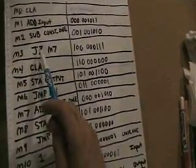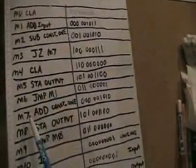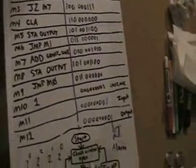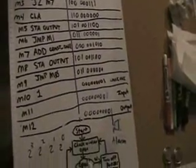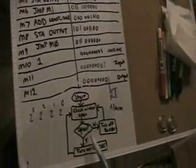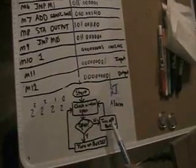Then we jump on zero. If the accumulator is zero, meaning the window is open, we jump to address seven where we will turn on the buzzer, following our flowchart. If the window is open, we turn on the buzzer. If it is not, we turn off the buzzer.